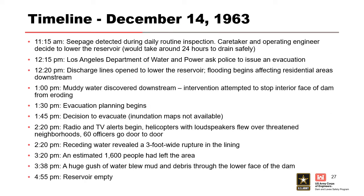Timeline: this was constructed in 1951. In December 1963, their daily inspection was happening — about 11 in the morning, a guy doing his routine walk-around. He started noticing a seepage issue. He contacted the appropriate people and they said we probably should start lowering the reservoir — it'll take about 24 hours to do that safely. An hour later at 12:15, they contacted local officials saying they were lowering the reservoir and there would be some flooding, so they needed to start notifying people. At 12:20, they opened the discharge lines and flooding began in residential areas downstream.